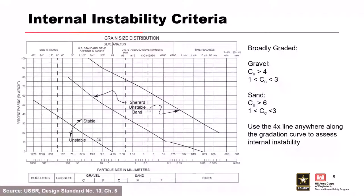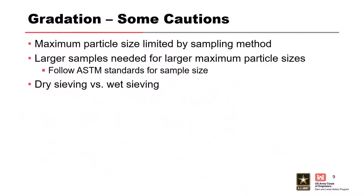This is the internal instability criteria developed by Charard. There's a 4x line that can be moved anywhere along the gradation curve. If your gradation curve is steeper than this line, the material is probably fine. If it's flatter — very well-graded material — you could see some potential internal instability. We also have limits based on coefficient of uniformity and coefficient of curvature. This comes into play heavily in filter design: you want fairly uniform filter materials so you don't introduce internal instability into the filter itself.